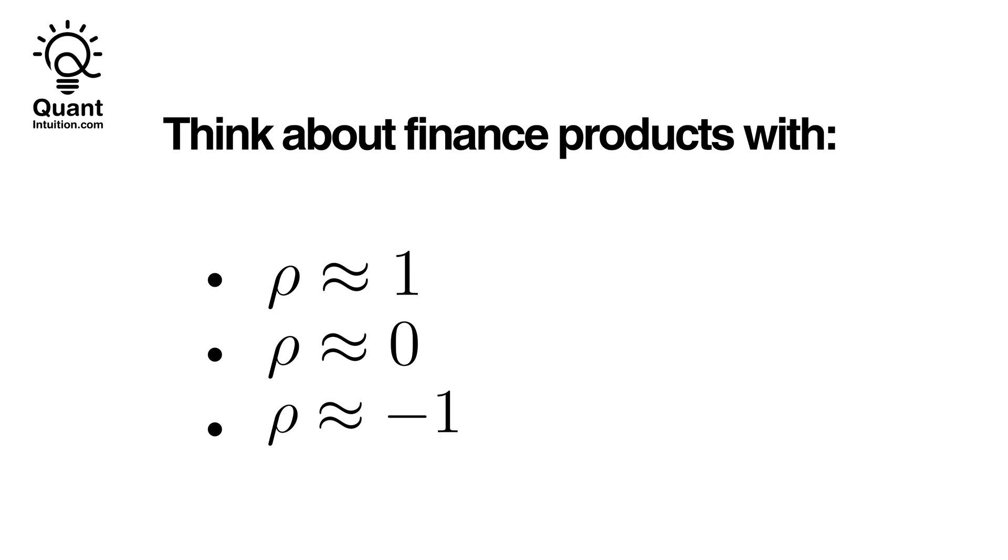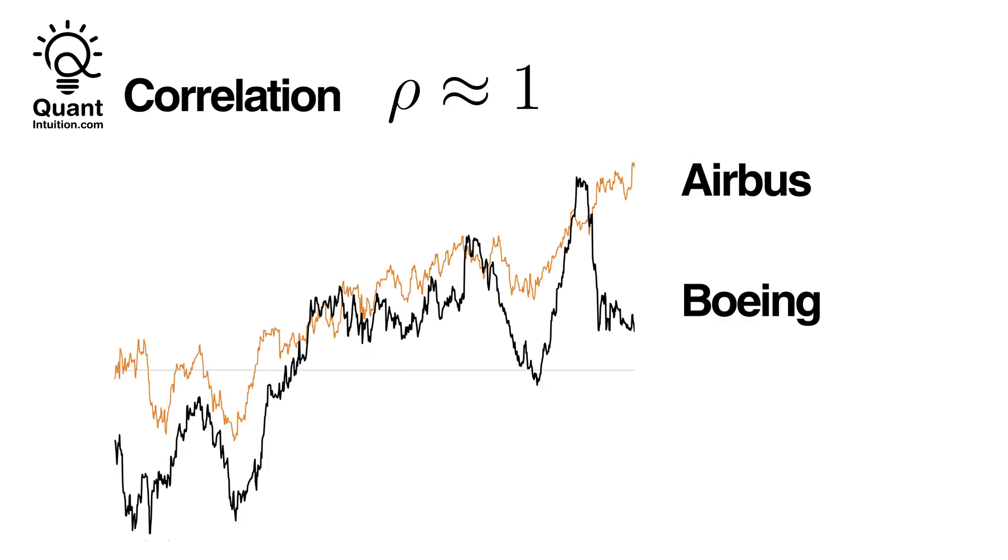Although there are several methods to define correlation, such as computing correlation on daily returns or other clearly defined timespans, we use it here more as a long-term heuristic on how these products relate to each other. There exist many examples that can be used to demonstrate this. Consider for example the stock chart of Boeing in black and Airbus in yellow.